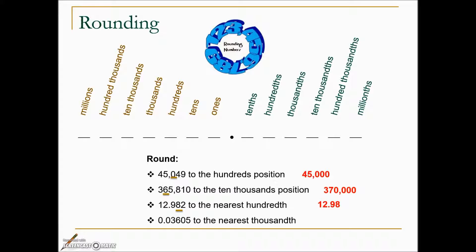This last example asks us to round to the nearest thousandth. In the thousandths position is six. Immediately to the right is zero. It's only the position immediately to the right of where we're rounding that we look at. Zero is not high enough to alter the six, so we will call this 0.036, or thirty-six thousandths.